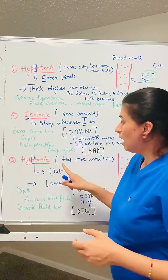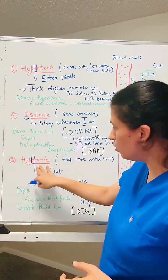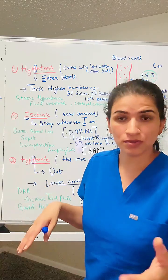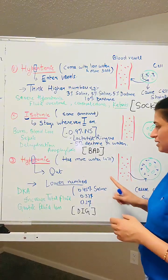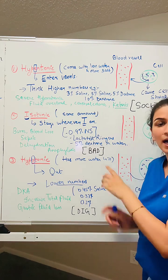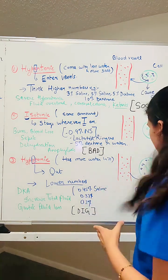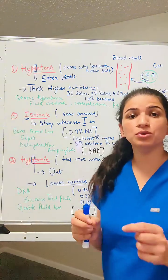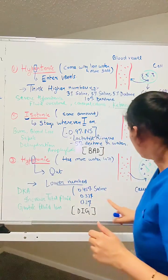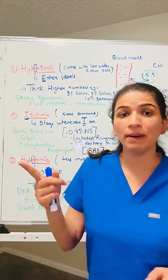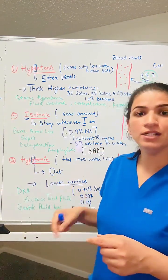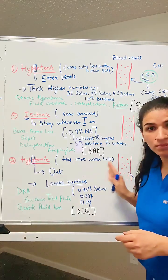Hypotonic solution has a lot of water and less salt. When you give this to a patient, a lot of water goes into the blood vessels, and that extra water shifts toward the cells, making the cell size bigger — more swelling. Remember the letter O in hypo: the extra water comes out from the blood vessels and goes into the cell.